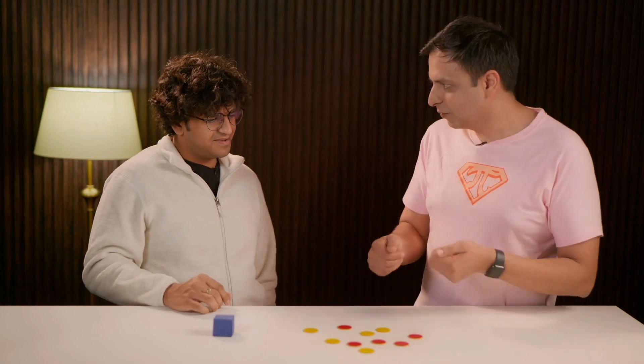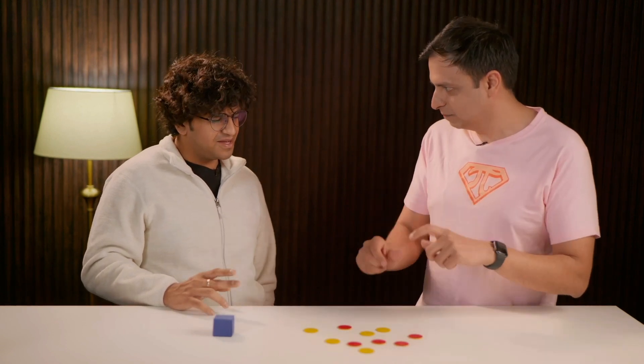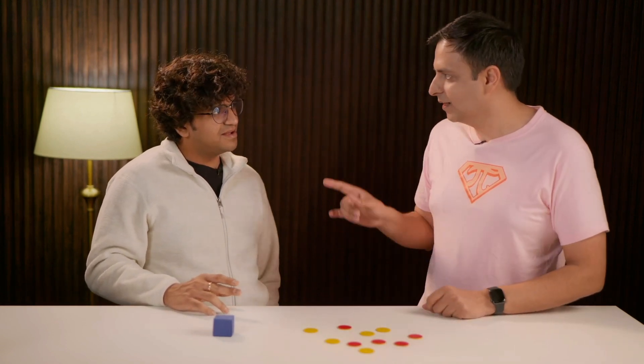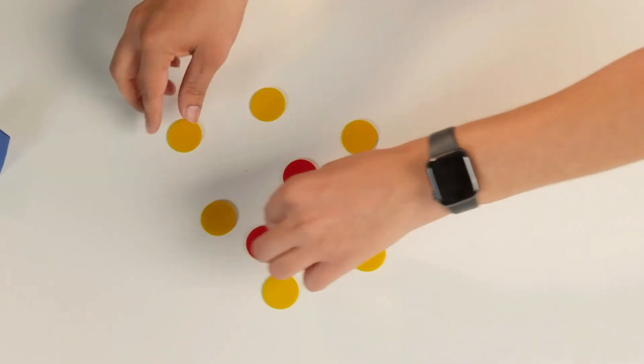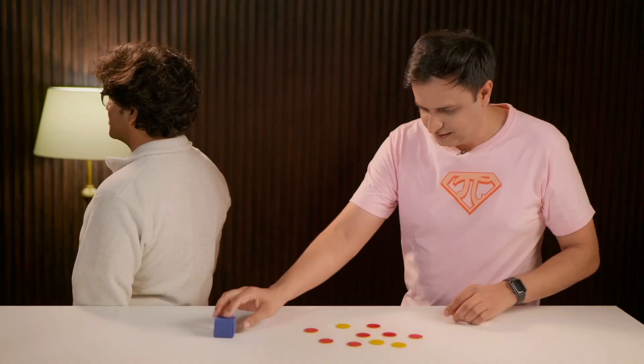So now I want you to turn back. I will flip a few coins at random. Okay. And then I'll hide a coin and then I want you to tell me which coin that is. All right. Okay. Turn around. Okay. Turn back.